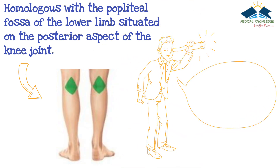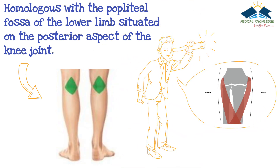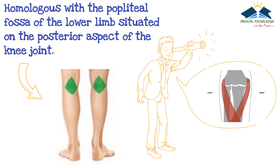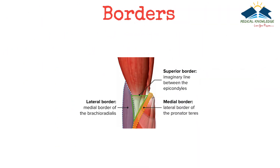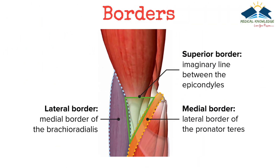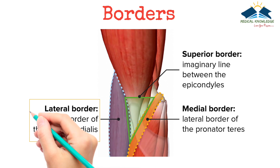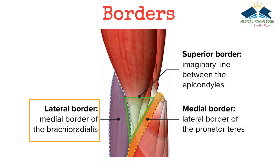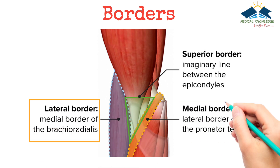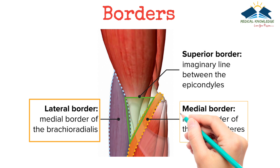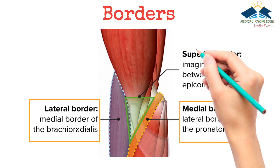In this article, we shall look at the anatomy of the cubital fossa, starting with its borders. The lateral border is formed by the medial border of the brachioradialis muscle. The medial border is formed by the lateral border of the pronator teres muscle.